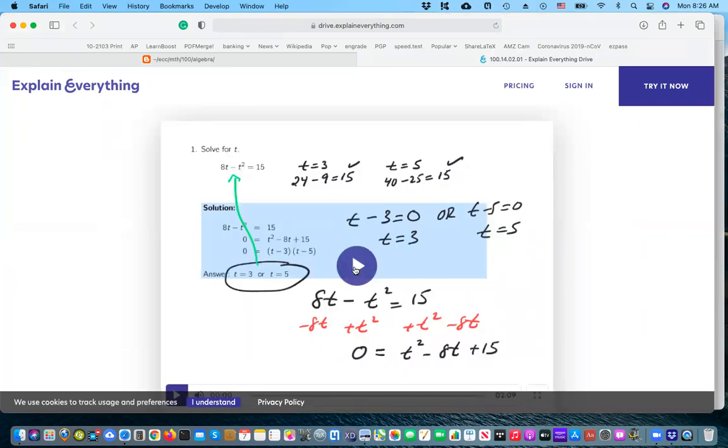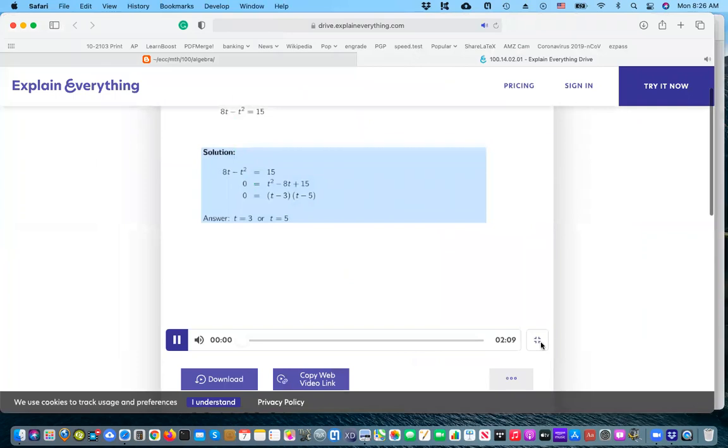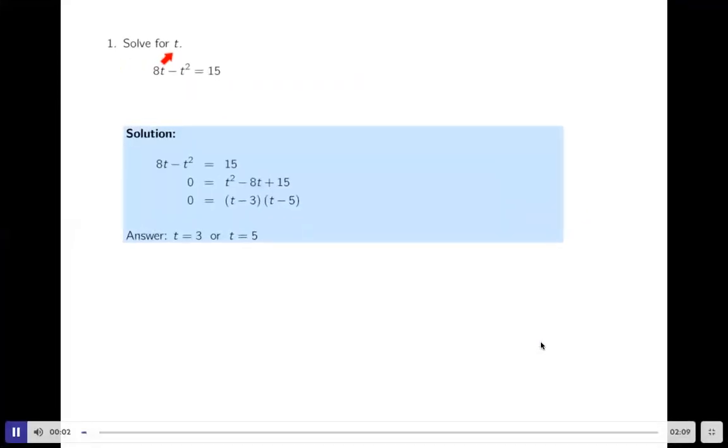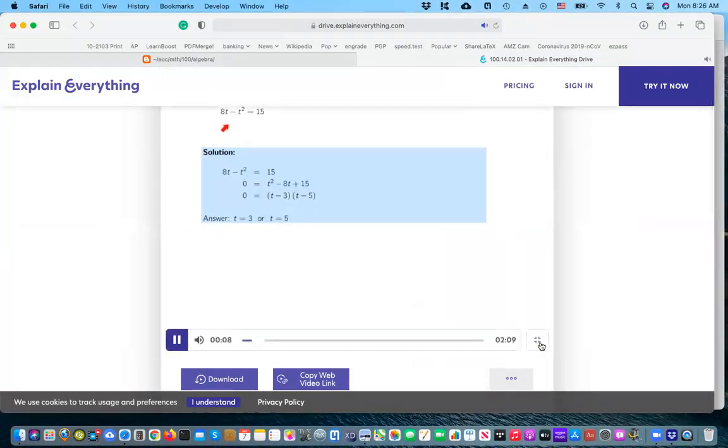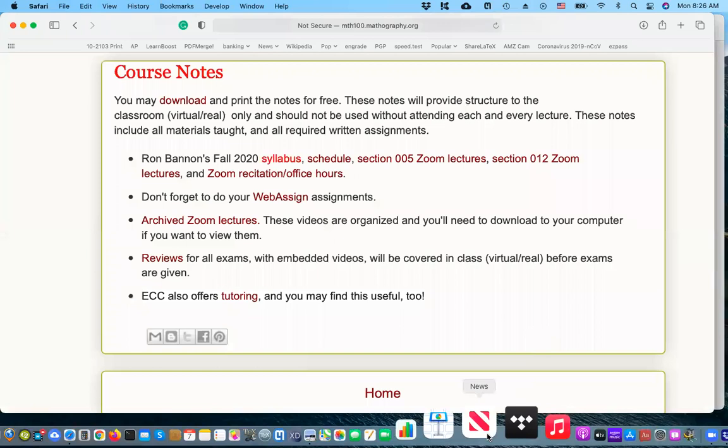You click play. Okay, this is the solve for the variable t. This is a quadratic equation. We're going to try to use a zero-product rule on it. I think you get the idea.